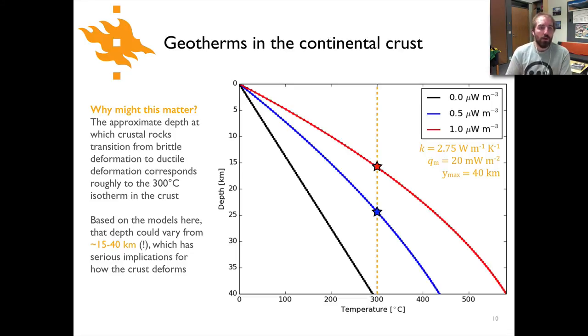Now why might this matter? The brittle ductile transition is an important transition in the earth where rocks go from dominantly faulting and behaving in a brittle manner to starting to flow and behave viscously. That occurs at about 300 degrees C. If you look at these three different geotherms with their different heat production values, you can see that the depth at which you'd hit about 300 degrees C varies from slightly over 40 kilometers depth to as little as 15 kilometers depth. That would have a pretty significant influence on how the crust might be deforming. In the first case with no heat production we might expect the crust to be brittle all the way down to 40 kilometers depth, so faults could easily cut all the way through the entire crust. Whereas in the upper case we'd only expect maybe the top 15 kilometers to be brittle and then perhaps be ductile beneath that.